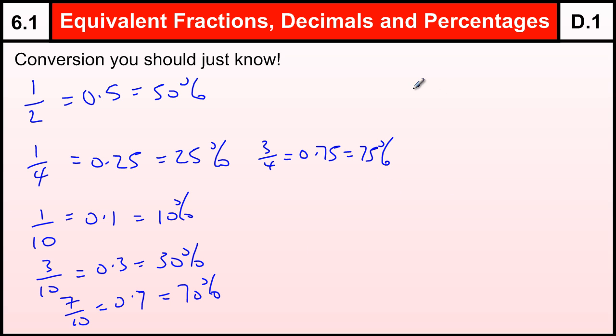Now, ones that we should really know, but people tend not to, thirds tend to cause problems. Quite a few people know that a third is 0.3 recurring, but written as a percentage, that's 33.3 recurring. Percent.